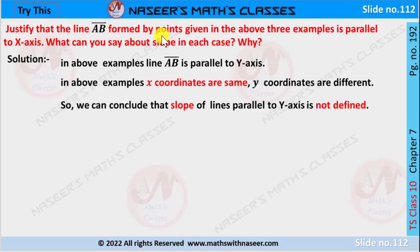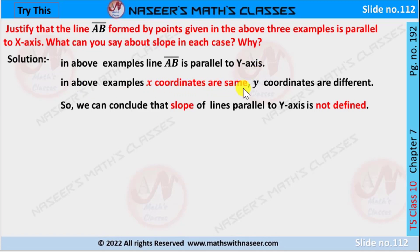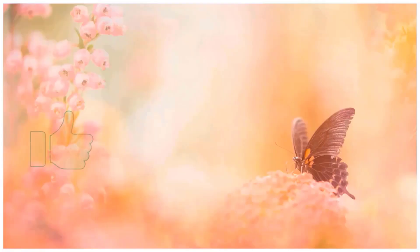Notice that the line AB formed by the points in the above three examples is parallel to the y-axis. In these examples, the x-coordinates are the same and the y-coordinates are different. We can conclude that the slope of a line parallel to the y-axis is not defined.